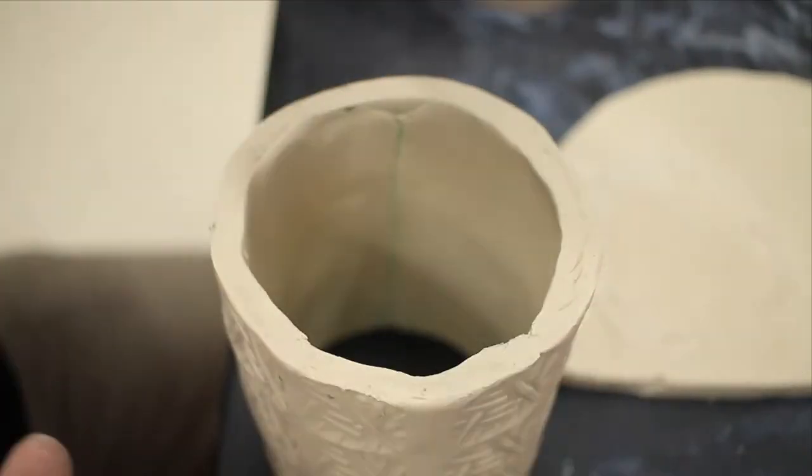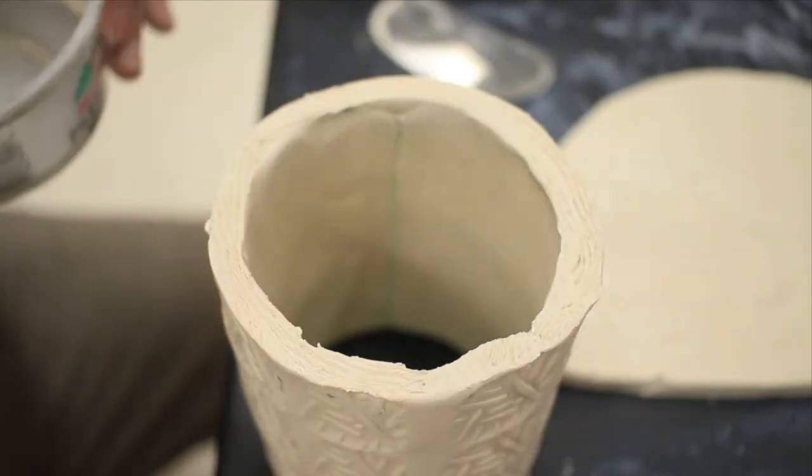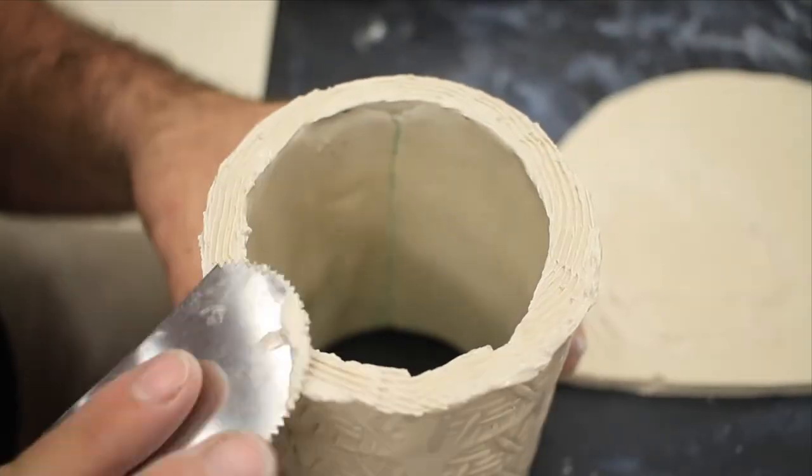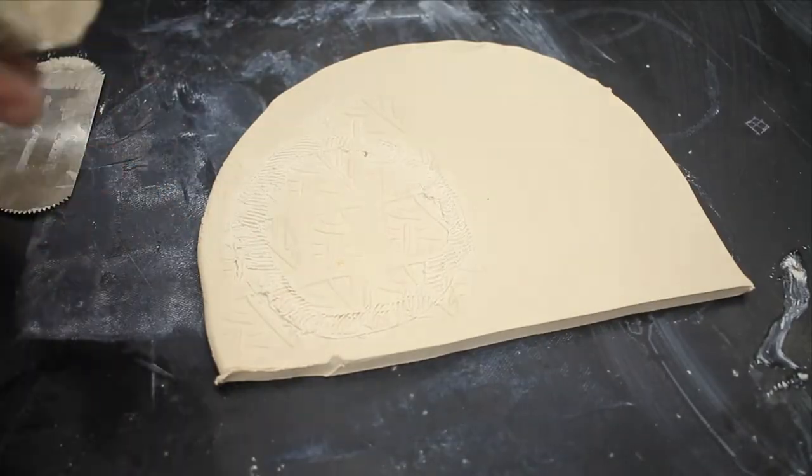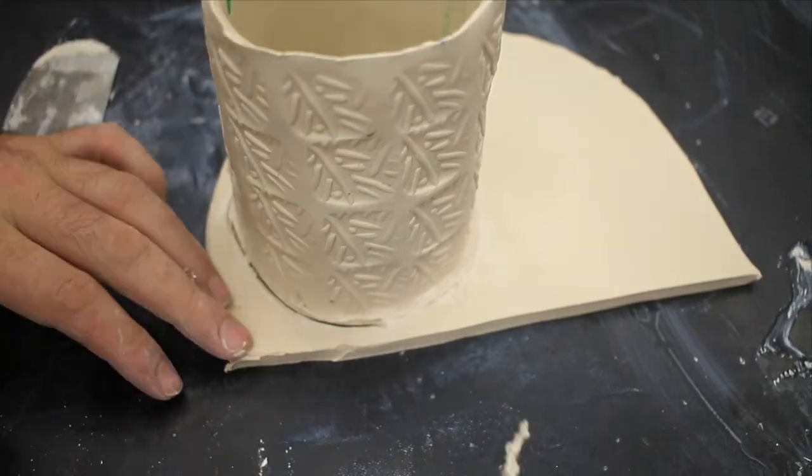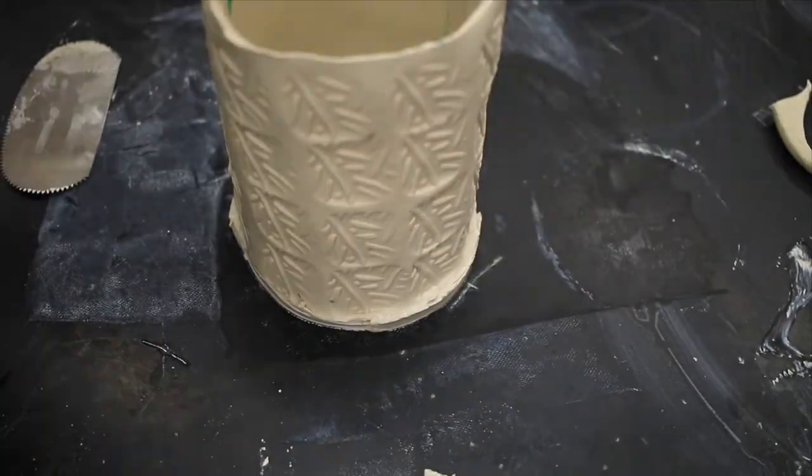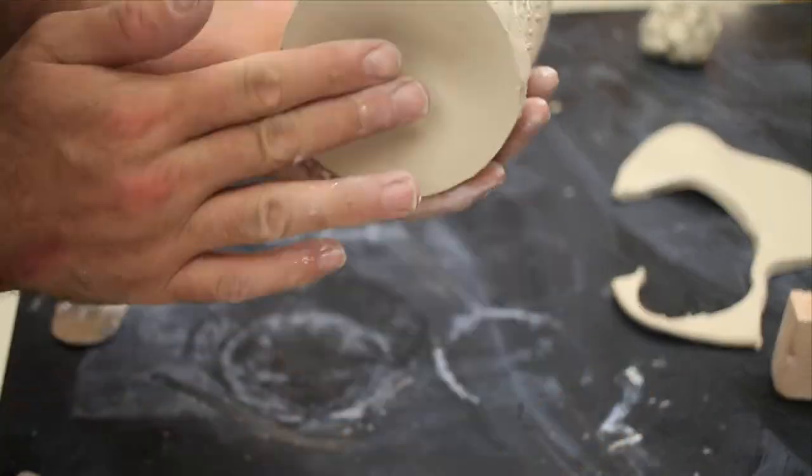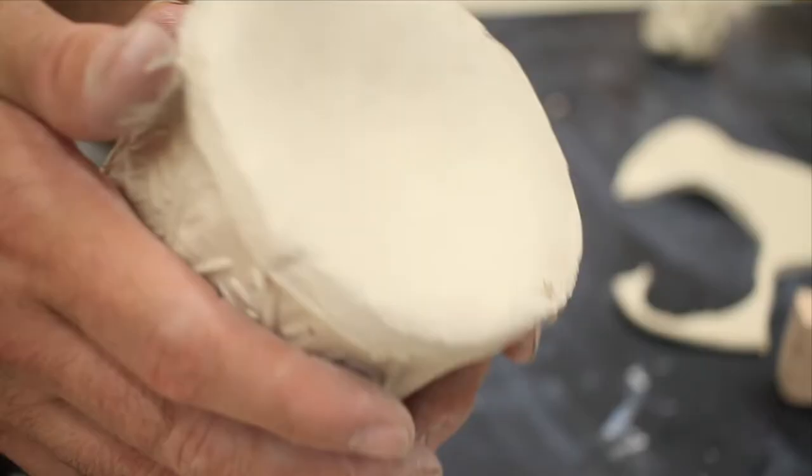Notice how the texture is facing up—this will be beautiful when you finish your cup of coffee. Score and slip it. Again, it's very wet, so all we need is the serrated rib and water. Give a little wiggle to lock it down, cut around it, finish the inside with a paintbrush, and use the back of your hand to make a slight impression.